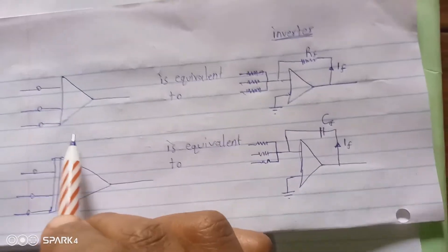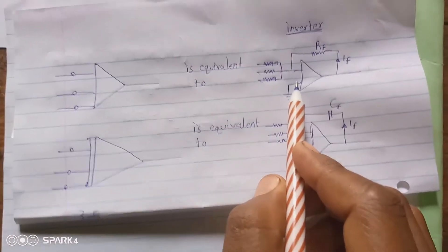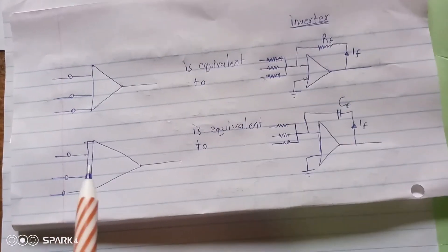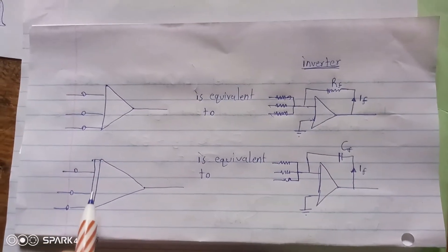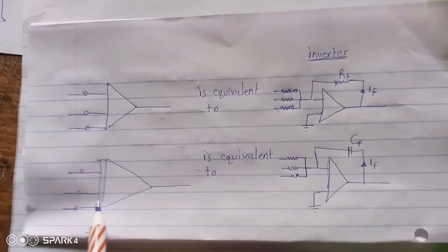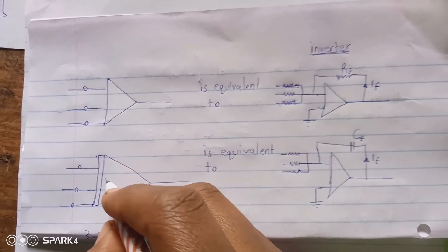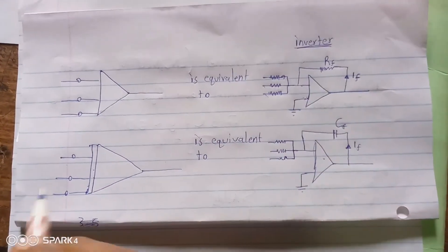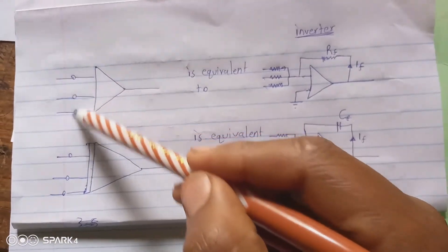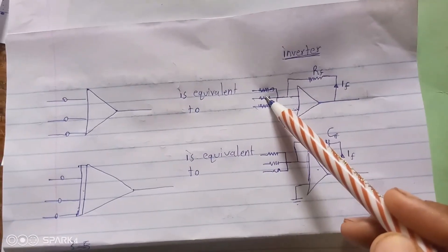To summarize: this symbol is the inverter, equivalent to the inverter circuit shown. In the next lesson, we will show how to obtain an analog flow diagram using an integrator. The integrator symbol has a bar, and it is equivalent to the integrator circuit shown. This element represents the summer. Thanks for watching — don't forget to subscribe.